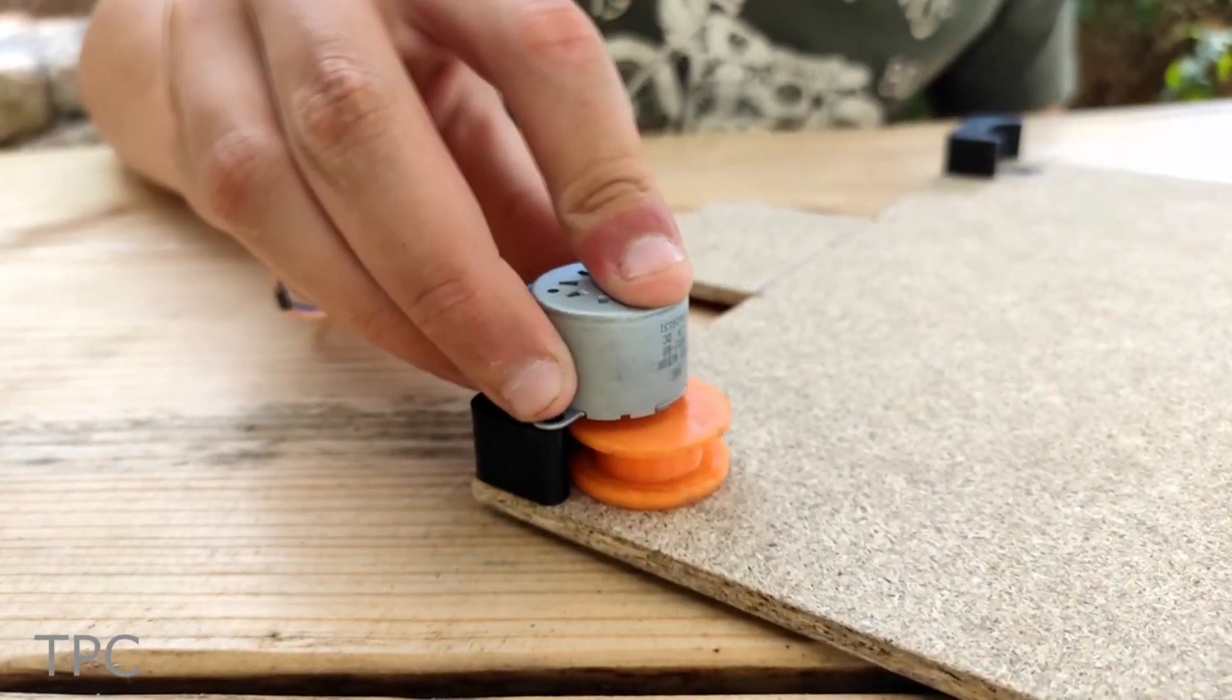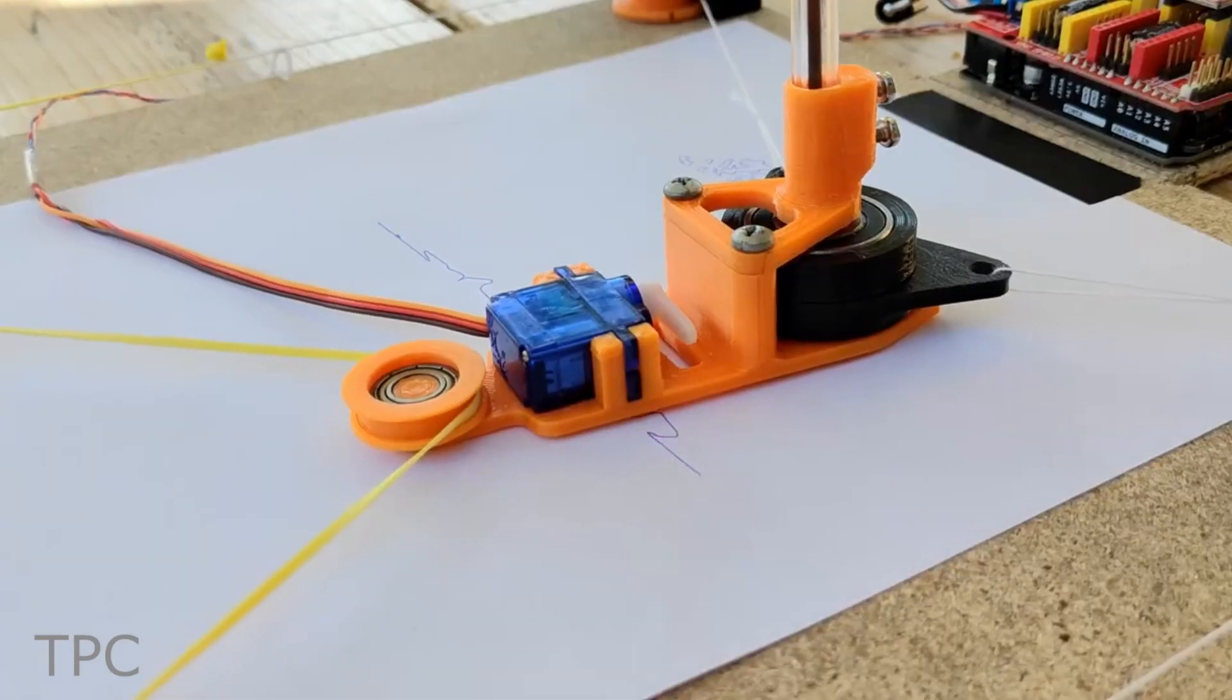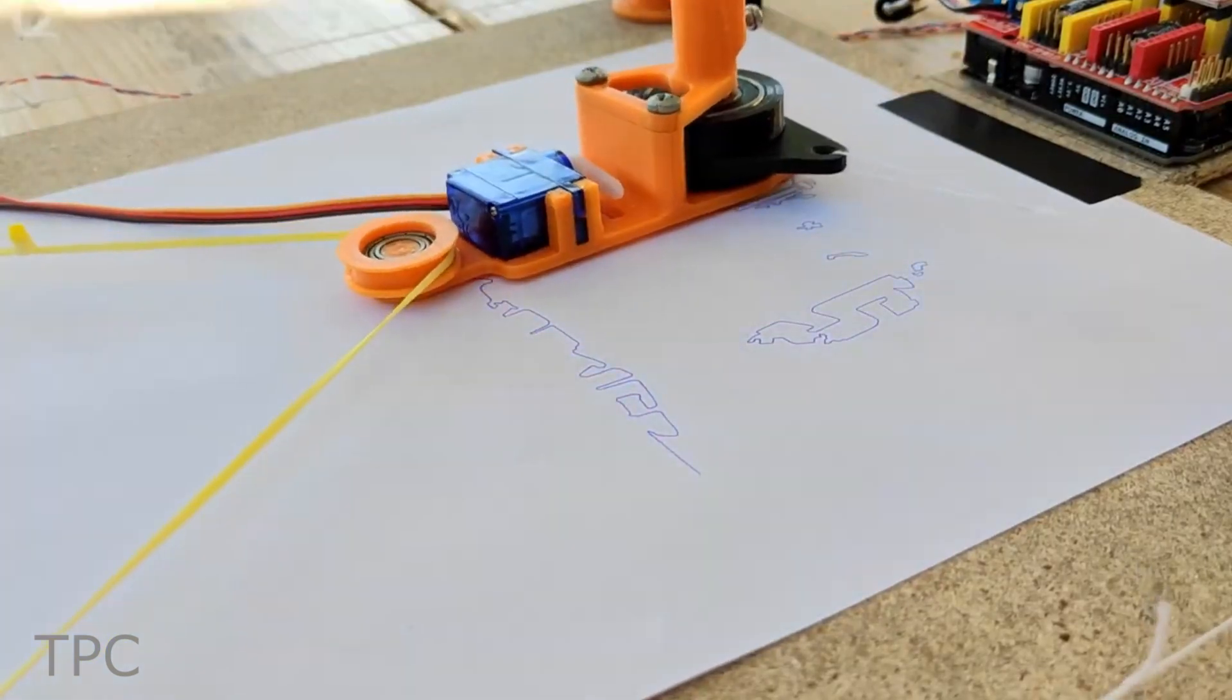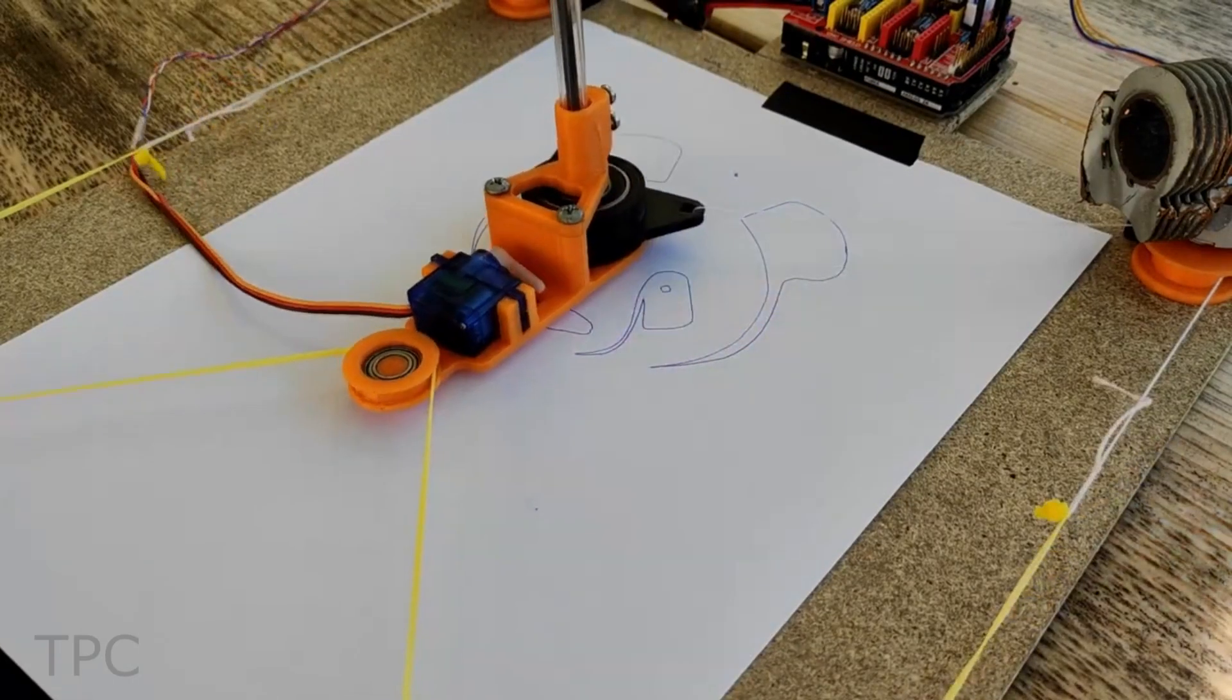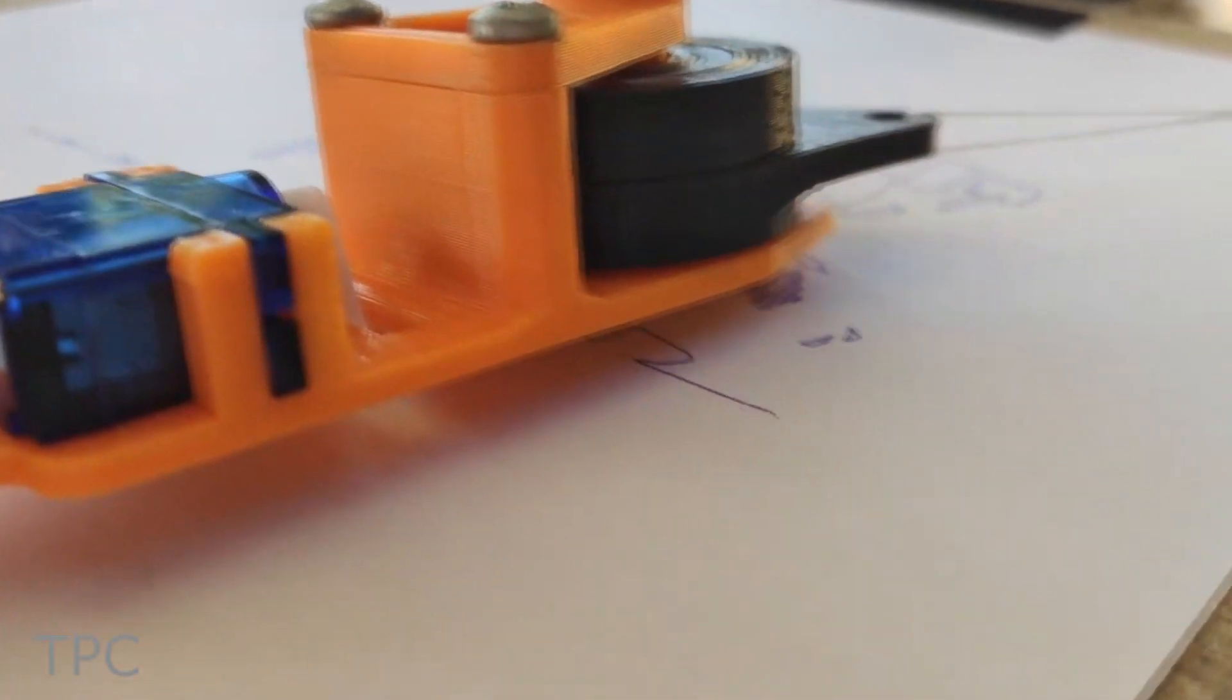Two servo motors on the top of the wooden board move the pen mechanism in horizontal and vertical directions, thus covering the 2D plane. The pen holder uses an RC servo to lift the whole pen off the sheet easily.